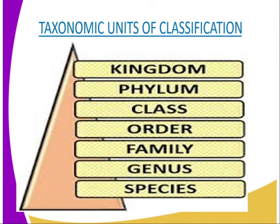In this hierarchy, the similarities will decrease from the higher rank to the lower rank. On the other hand, the differences decrease as well. So as we are moving from the kingdom to the species, the differences decrease while the similarities will also decrease.